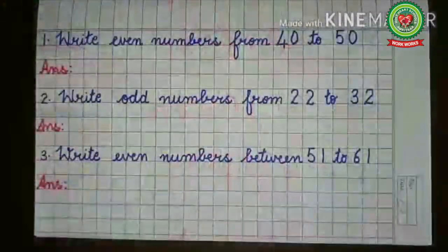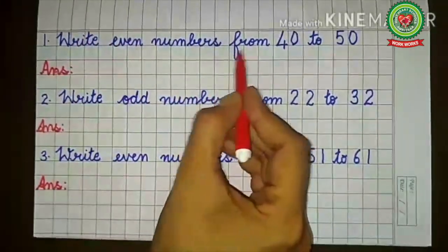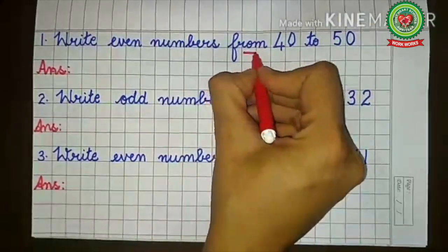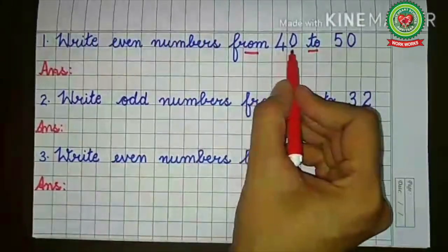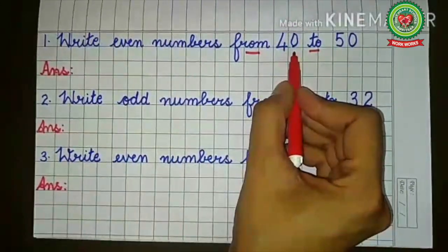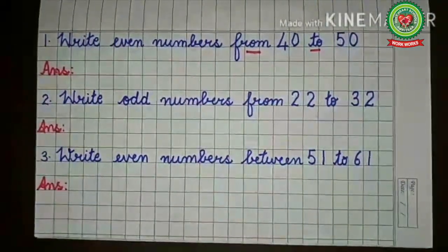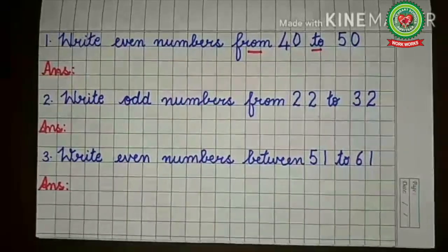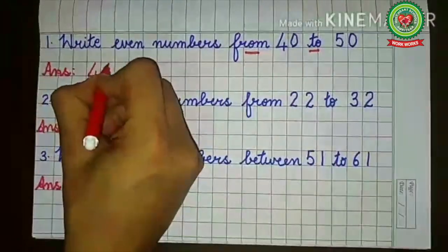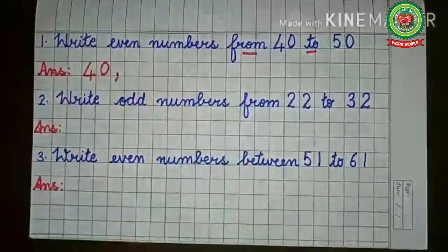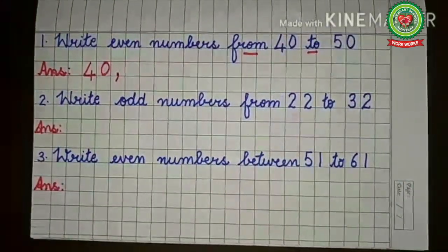Now let's write even numbers from forty to fifty. First we check forty — we know numbers ending with two, four, six, eight, and zero are even numbers. Forty ends with zero, so forty is an even number.